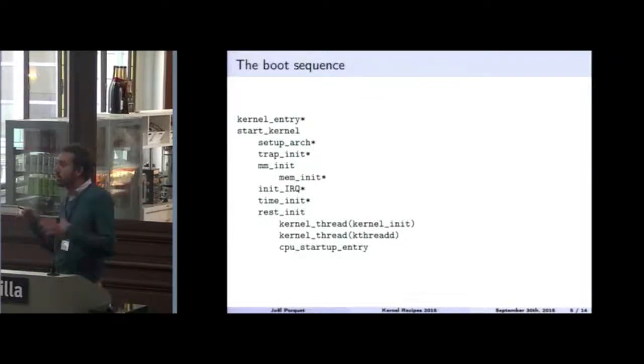And so then once we have this Linux that compiles, we can start implementing the different functions. Here we have an excerpt of the boot sequence starting with kernel entry, which is the very first function, usually written in assembly language that the boot loader jumps to once it's done loading the kernel image in memory. Kernel entry calls start kernel, which is the first C function that's completely arch independent. Then this function starts initializing a bunch of stuff and calls many arch specific functions, which are the functions that have this little star.